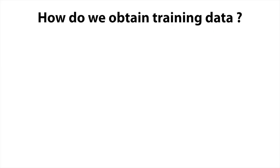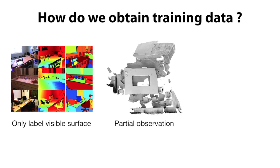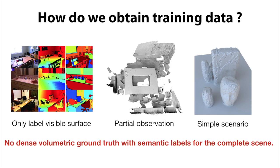However, a significant challenge is how to obtain training data for such a network. Existing RGBD datasets only provide labels for visible surfaces, and due to occlusion and limited viewpoints, many parts of the scene are unobserved. Datasets that do contain complete geometry focus on simple scenarios such as single objects or tabletops. Therefore, no existing dataset provides dense volumetric ground truth with semantic labels for the complete scene.